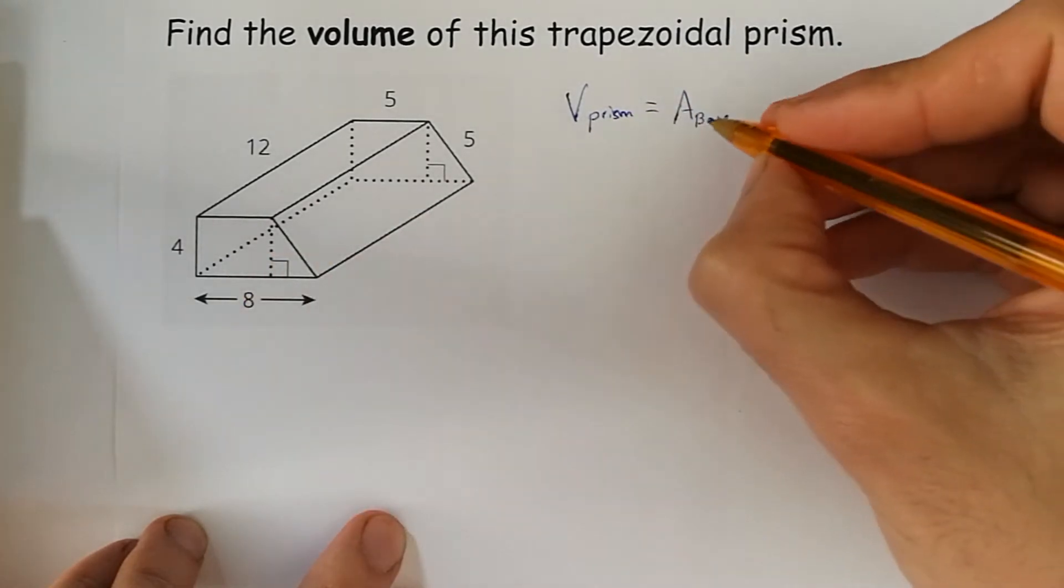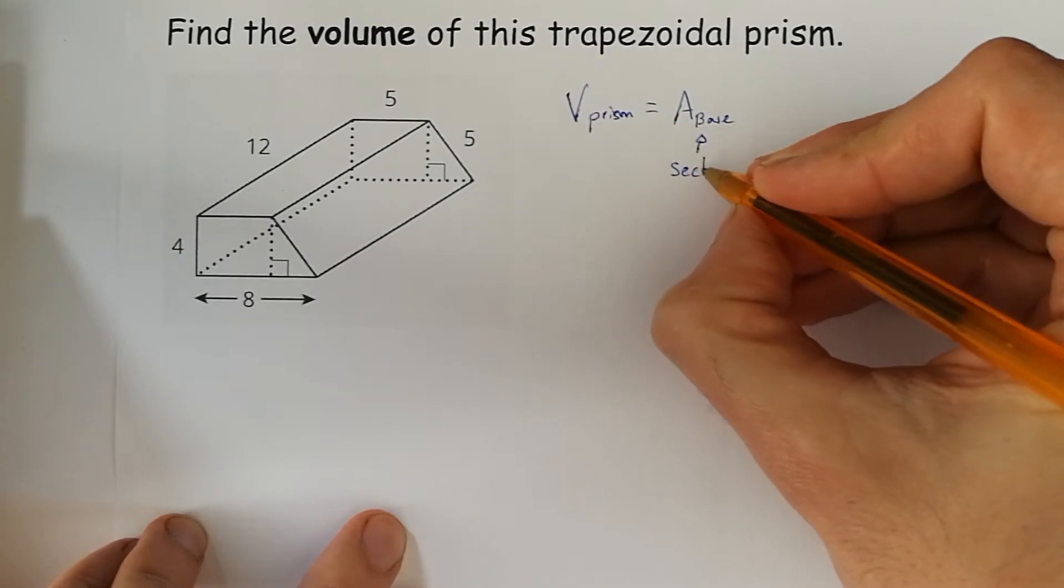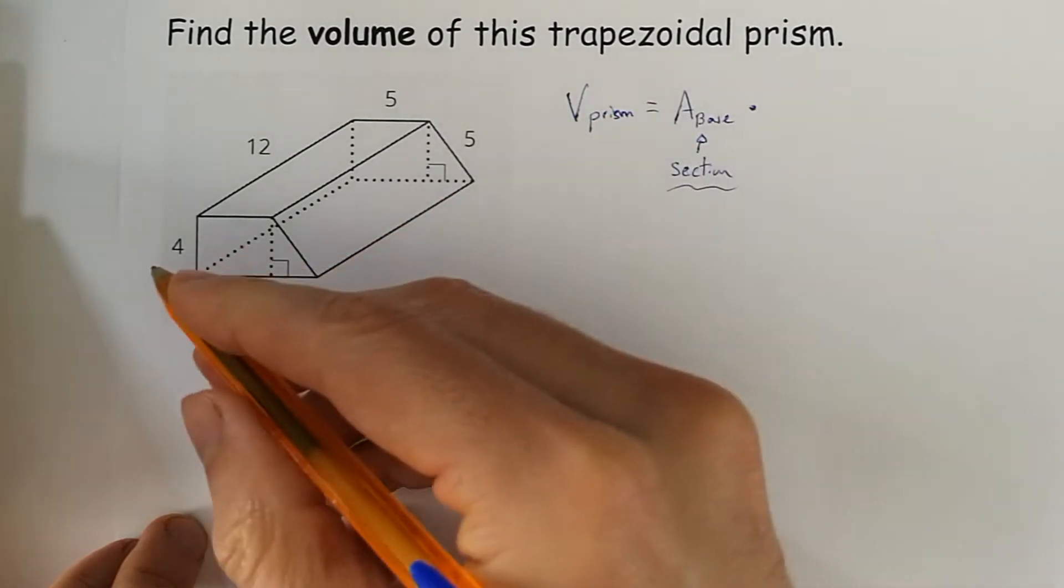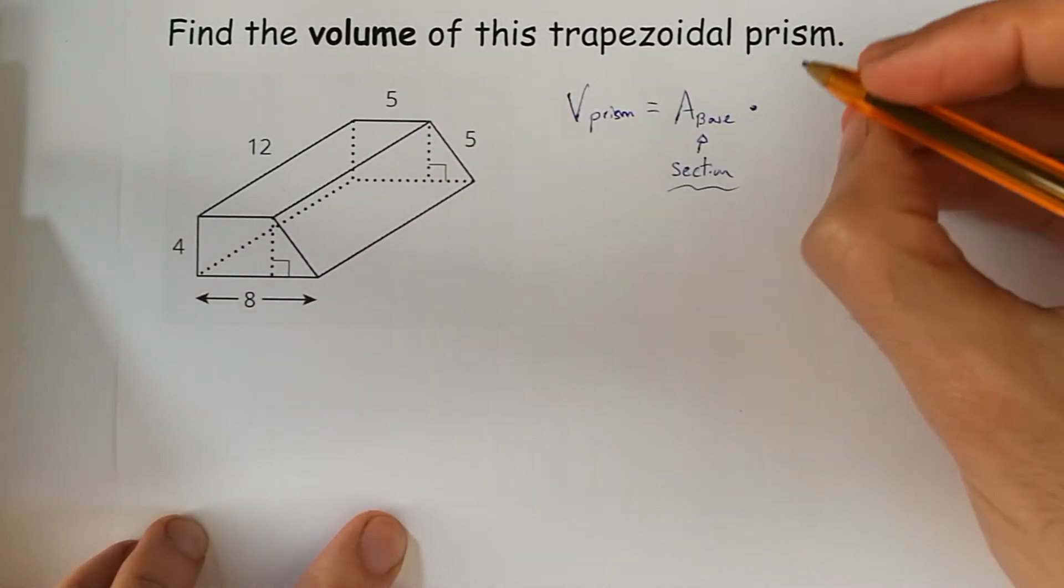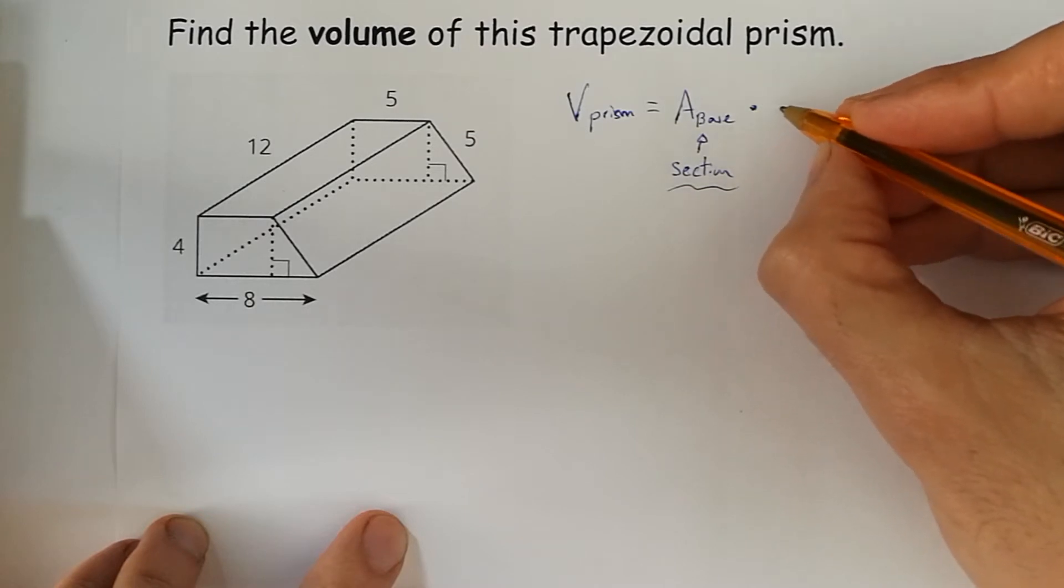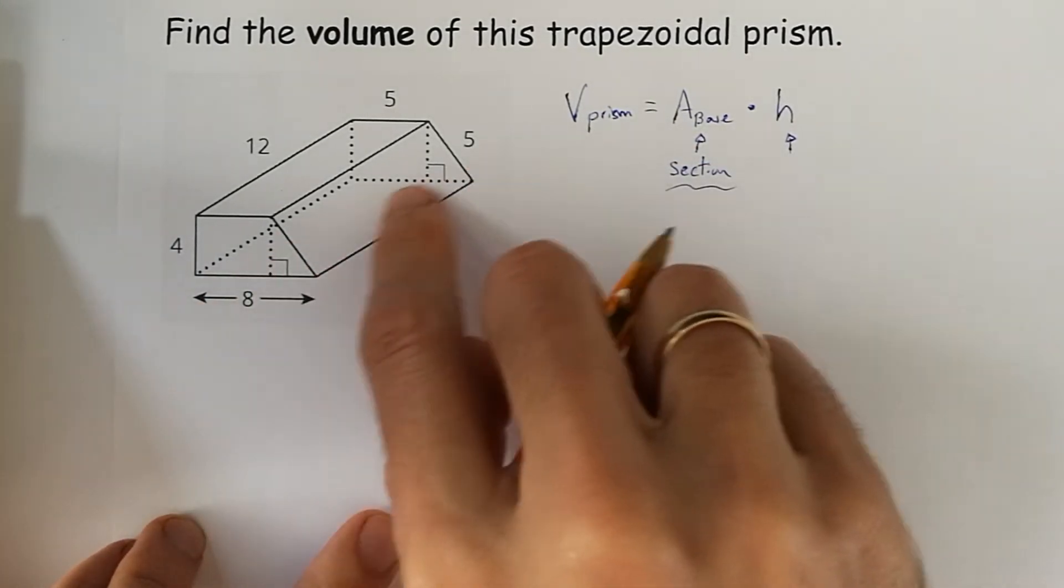in this case maybe it's better to see it as a section, times the depth or the length of the prism. In this case it's like a height, but here maybe you can see it as the length.